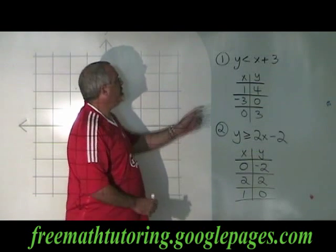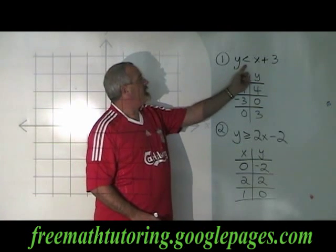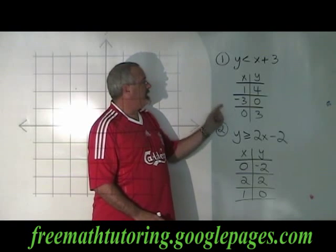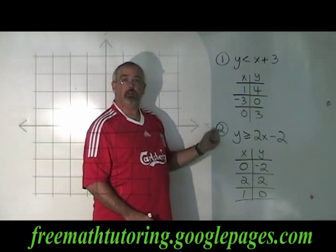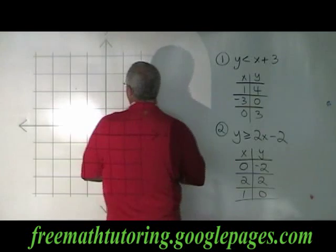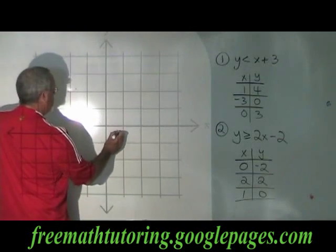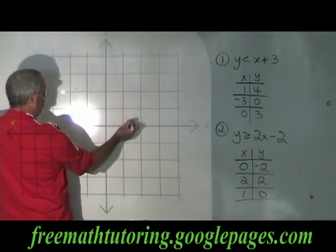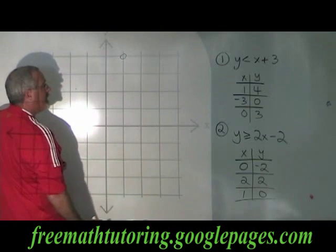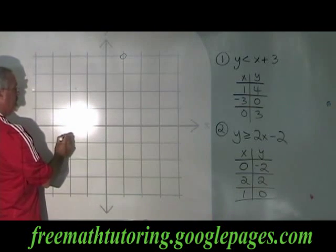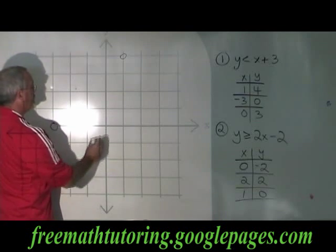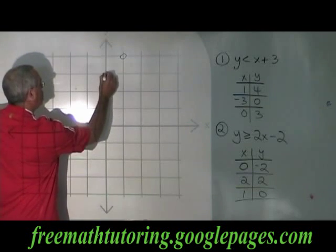In example 1, y is less than x plus 3. I have made this table of values and I'm going to graph it. The first point is (1, 4) — that's right here. The second point is (negative 3, 0), and the third point is (0, 3).